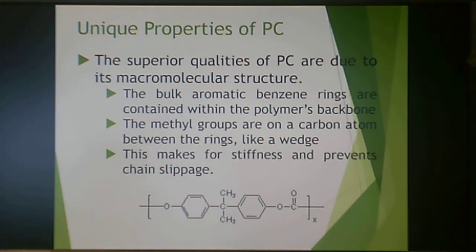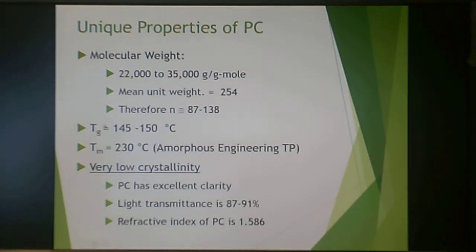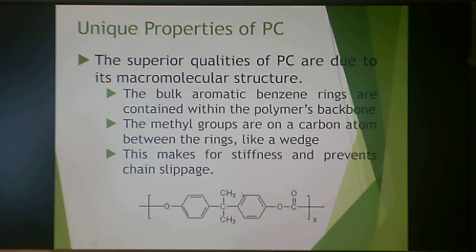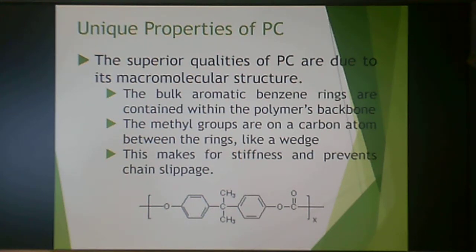Due to its macromolecular structure, polycarbonate has bulky aromatic benzene rings from bisphenol A in the polymer backbone, which drive the Tg up significantly — compared to something like nylon at around 50°C, adding aromatic groups raises Tg and makes the molecules very rigid. The methyl groups on the carbon between the two rings act like a wedge. Between backbone rigidity and these methyl wedges, chains cannot easily slip past each other, allowing the polymer to absorb energy rather than shatter — making it highly beneficial for bullet-resistant glass.